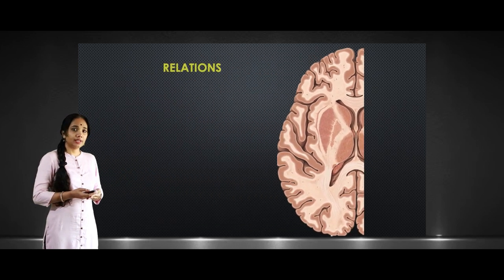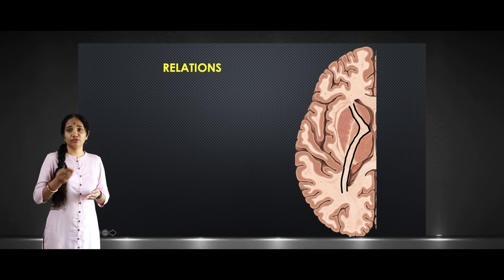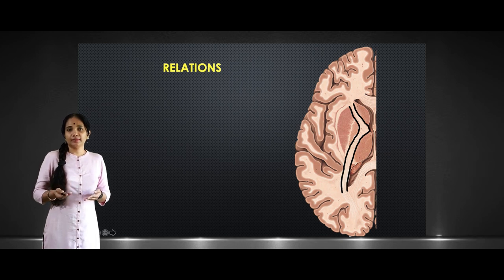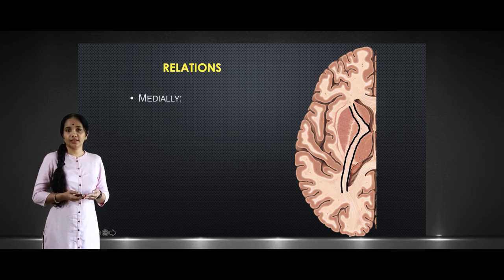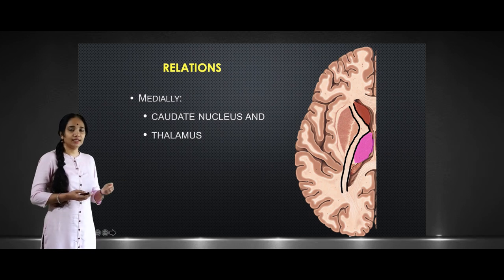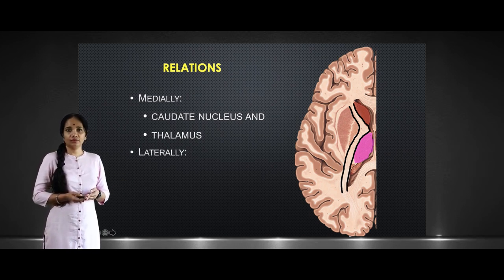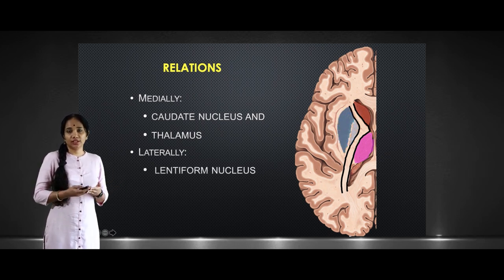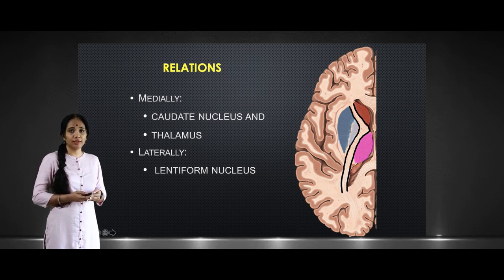Let us zoom in and see the relationships of the internal capsule. It has medial relations and lateral relations. Medially and anteriorly we have the head of the caudate nucleus, and posteriorly medially we have the thalamus. Laterally we have the lentiform nucleus, which is the putamen and the globus pallidus together — the putamen on the outside and the globus pallidus on the inside.